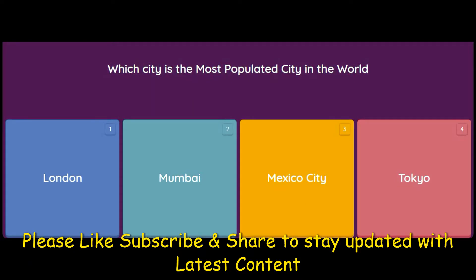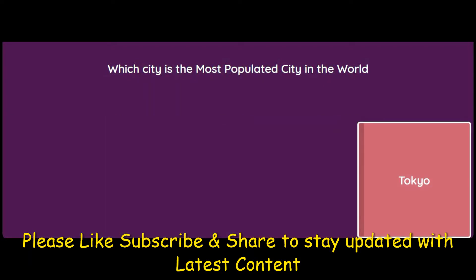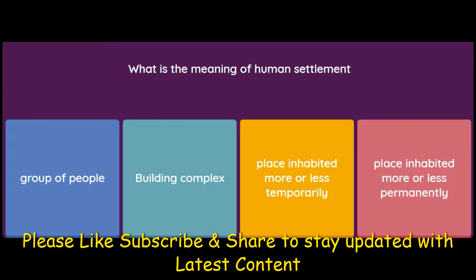Which city is the most populated city in the world? London, Mumbai, Mexico City, or Tokyo? The answer is Tokyo — Tokyo is the most populated city in the world.